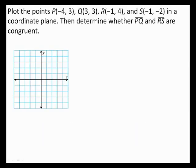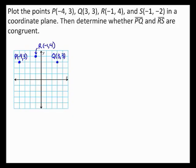Plot the points P, Q, R, and S in a coordinate plane. Then determine whether segment PQ and segment RS are congruent. To plot point P, plot a point that lies 4 units to the left of the origin and 3 units up. To plot point Q, plot a point that lies 3 units to the right of the origin and 3 units up. To plot point R, plot a point that lies 1 unit to the left of the origin and 4 units up. To plot point S, plot a point that lies 1 unit to the left of the origin and 2 units down.